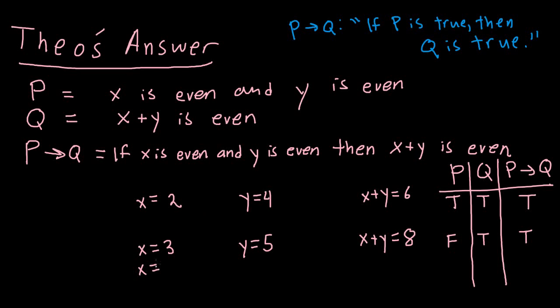Let me plug in one more thing to round this out. If X=3 and Y=4, then X plus Y = 7. Here P is false and Q is false, and P implies Q is true — which is correct because our statement P implies Q is a true statement. We also need false implies false to be true for sentences like this to work.